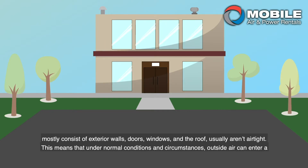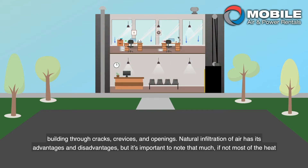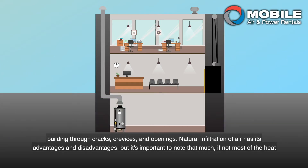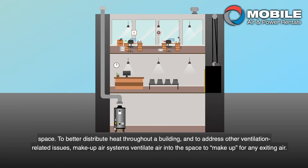This means that under normal conditions and circumstances, outside air can enter a building through cracks, crevices, and openings. Natural infiltration of air has its advantages and disadvantages, but it's important to note that much, if not most, of the heat energy in a typical space goes towards warming infiltrated air. Under certain conditions, this natural infiltration can cause problems with how heat is distributed throughout a space.